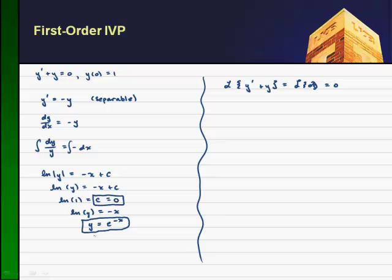The Laplace transform of y prime, if we look at an earlier video, is s*Y(s) minus y(0). And then the Laplace transform of y plus Y(s) equals 0.